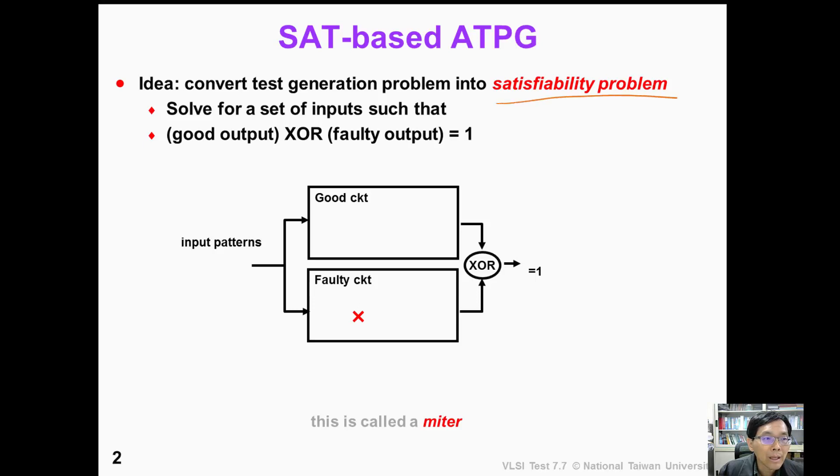So how can we do that? We can create a duplication of two circuits: one is the good circuit, the other one is the faulty circuit, and we inject our fault into this faulty circuit.